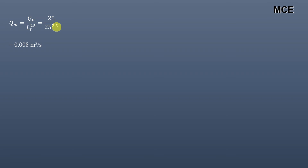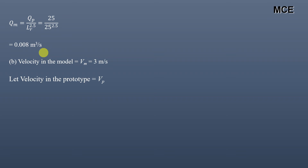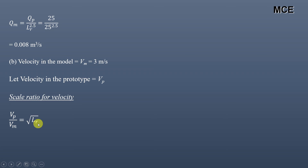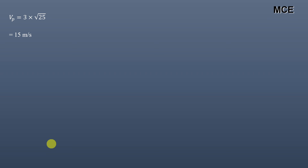The velocity in the model is given as 3 meters per second. Let us assume that the velocity in the prototype is Vp. The scale ratio for velocity in Froude's model law is given as Vp/Vm = square root of Lr. So the velocity of the prototype equals the velocity of the model times the square root of the scale ratio, which is 3 × √25 = 15 meters per second.